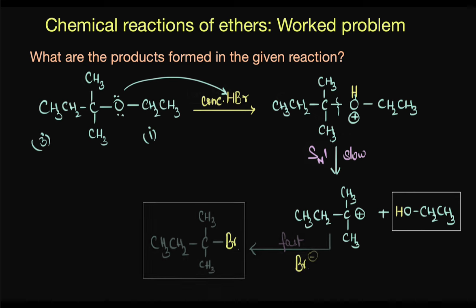And the last step is the attack of the nucleophile which is obviously a fast step, where the Br- attacks the carbocation and results in the formation of a tertiary alkyl bromide. So you can see that the products formed in this reaction are a tertiary alkyl bromide and ethanol.